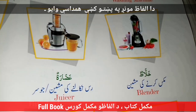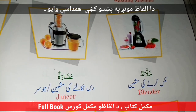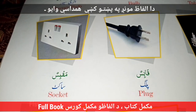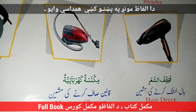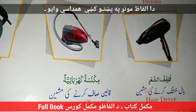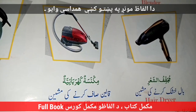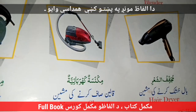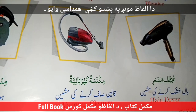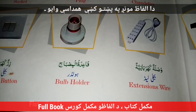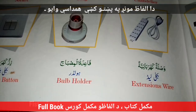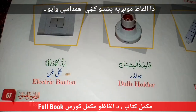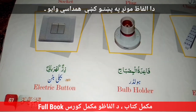Blender — The Mixed Kowlo Machine. Juicer. Plug. Socket. Hair Dryer. Vacuum Cleaner — The Kalin Vagyra Saaf Kowlo Machine. Outable Machine — The Vigto Machine. Extension Wire. Bulb Holder.